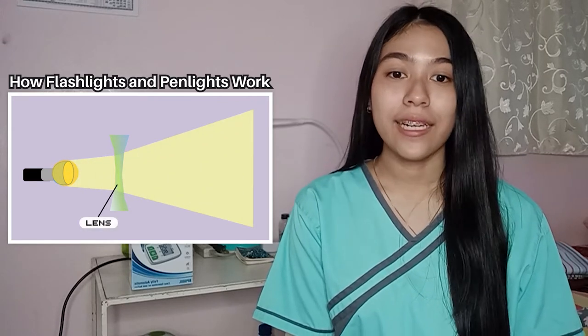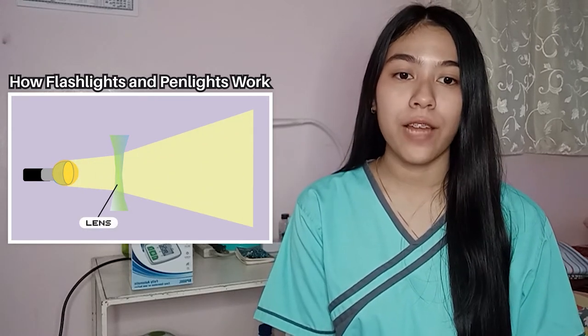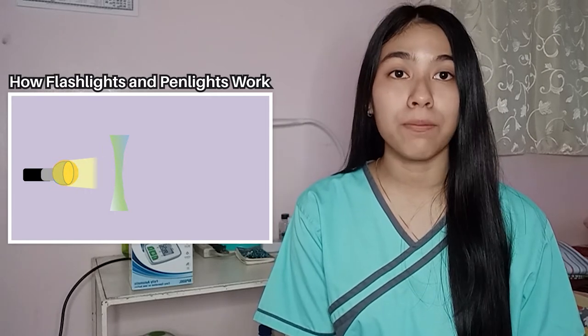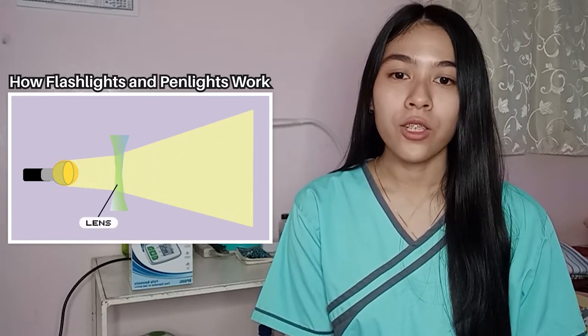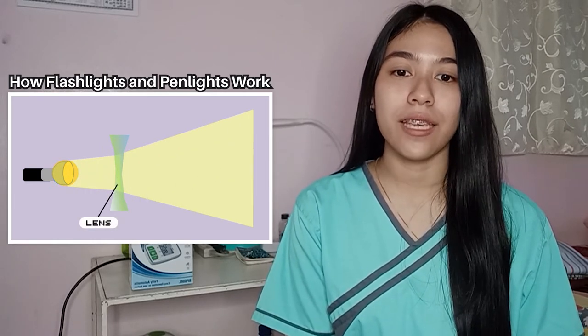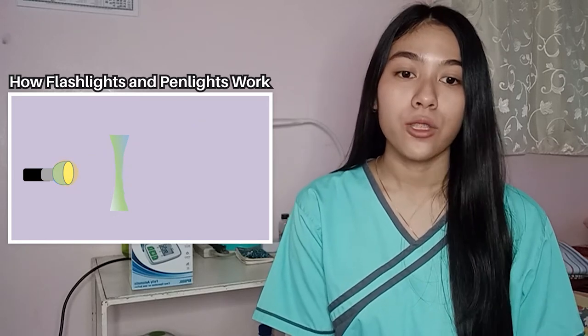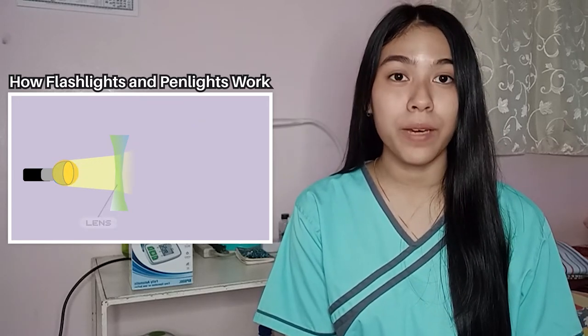A clear lens covers the lamp on your flashlight so that the glass on the lamp does not get broken. Concave lenses are used in flashlights to magnify light produced by the bulb.